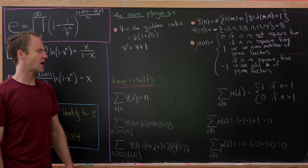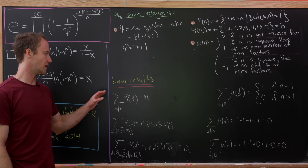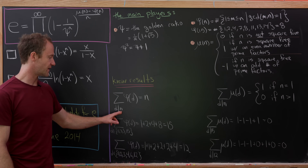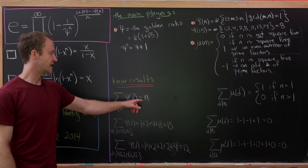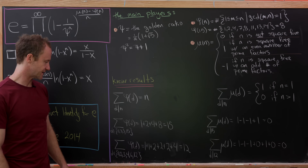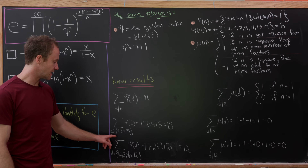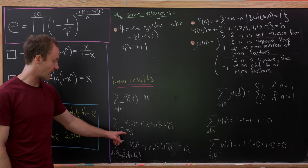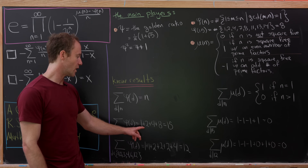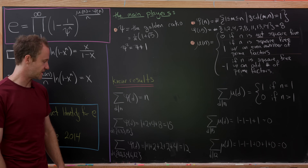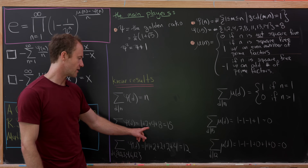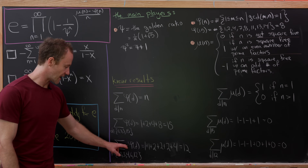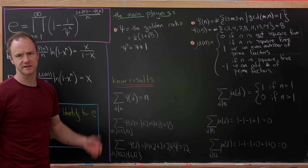We're going to use two known results about these functions. The first is that if we sum phi of d over all divisors d of n, we get n. For example, the divisors of 15 are 1, 3, 5, and 15, and summing phi at those values gives 1 plus 2 plus 4 plus 8, which equals 15. You can verify the values of the Euler phi function at each divisor, and it works out for 12 as well.